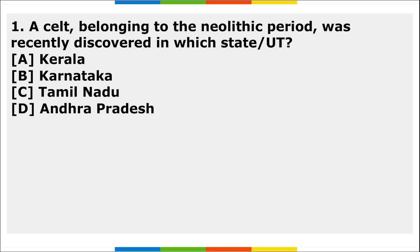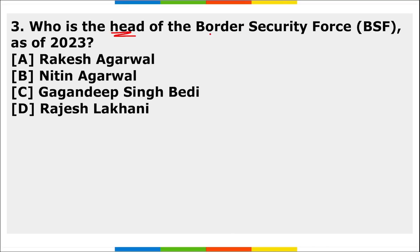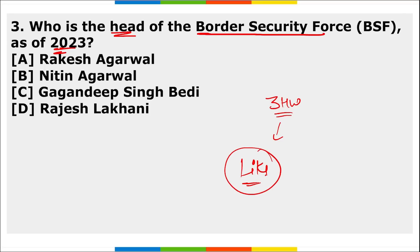Kotak General Insurance partnered with Active.ai to provide insurance products for MSMEs. Homework questions: Which state recently discovered a cell belonging to the Neolithic period? Which city hosted the first National Training Conclave? Who is the head of the Border Security Force as of 2023? Maximum participation is expected in the homework section — please comment your answers below.